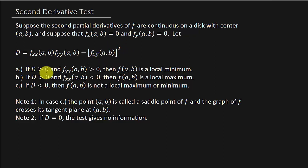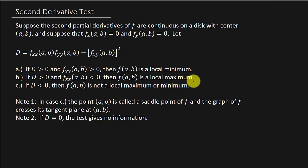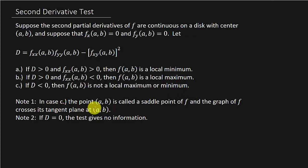If D is positive and the second partial of f with respect to x is positive, then f(ab) is a local minimum. If D is positive and the second partial of f with respect to x at ab is negative, then f(ab) is a local maximum. And if D is less than zero, then f(ab) is not a local maximum or minimum. In that case, the point ab is called a saddle point of f, and the graph of f crosses its tangent plane at ab.